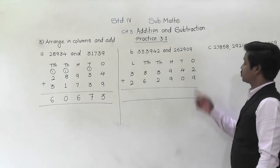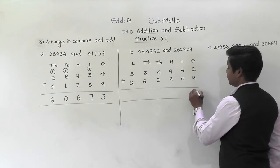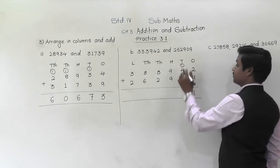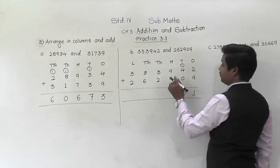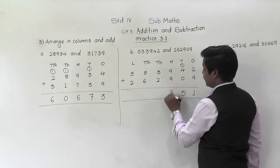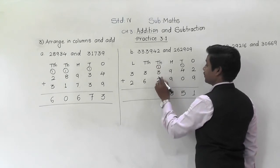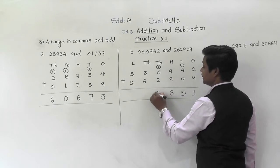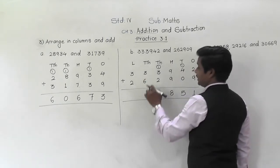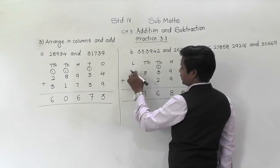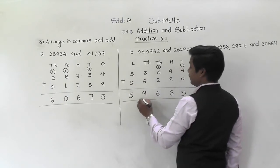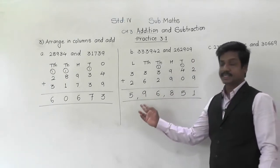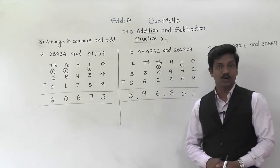Let us add them. 9 plus 2 is 11 — 1 will come down, 1 will be carried. 4 plus 0 plus 1 is 5. 9 plus 9 is 18 — 8 will come down, 1 will be carried. 3 plus 2 is 5, and 5 plus 1 is 6. 6 plus 3 is 9, and 3 plus 2 is 5. The answer is 5,96,851.